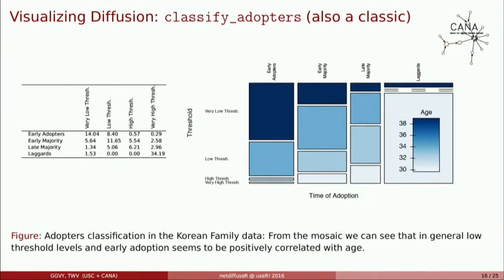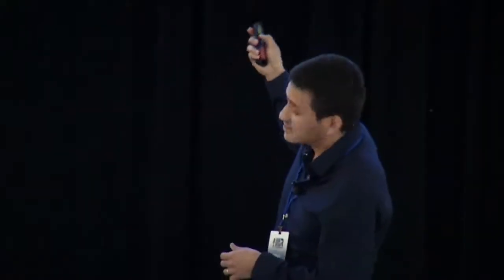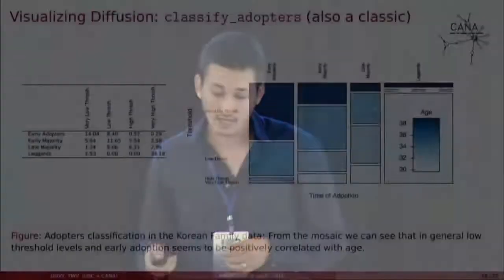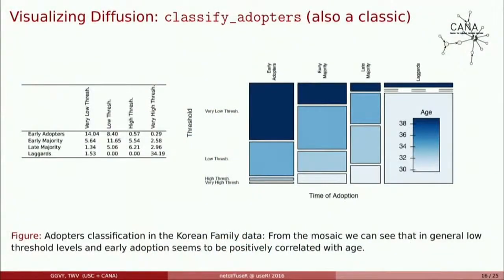Another classic: you can classify adopters depending on their time of adoption following Roger's classification — early adopters, later adopters, laggards — and Tom's classification using threshold levels as well. Here you can visualize it like this. For the Korean family planning data, we can see that women who adopted earlier are older.